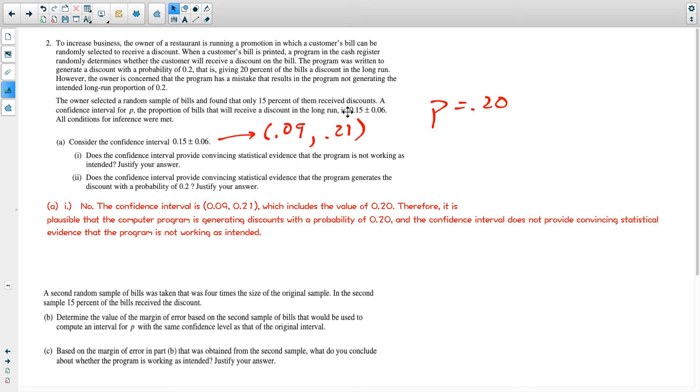Once again, our interval is from 9% to 21%, so any value between those two is plausible. It doesn't have to be 0.2 based on our interval. So that being said, the confidence interval includes values from 9 to 21, so any value in that interval is plausible for the probability the computer is using to generate discounts. That takes care of part A.